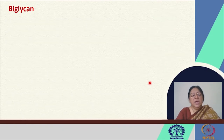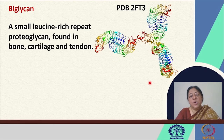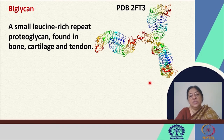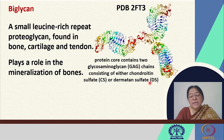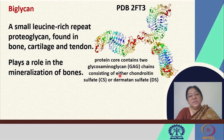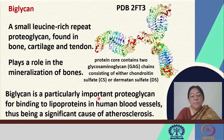Perlecan is investigated in relation to several diseases such as cardiovascular diseases, genetic diseases, cancer, and diabetes. Biglycan is a small leucine-rich repeat proteoglycan found in bone, cartilage, and tendon. It plays a role in the mineralization of bones, with a protein core containing two GAG chains consisting of either chondroitin sulfate or dermatan sulfate. This glycan is particularly important as a proteoglycan for binding to lipoproteins in human blood vessels and has a role in disease.